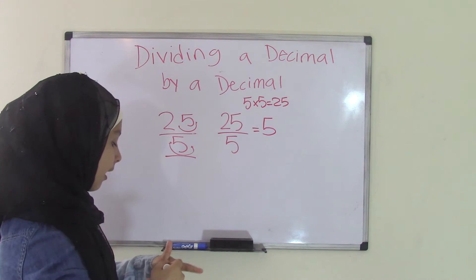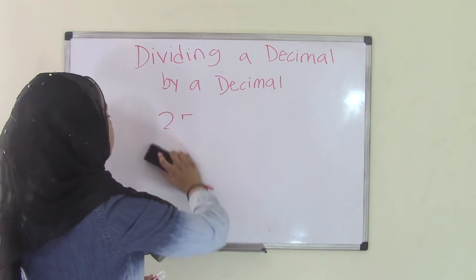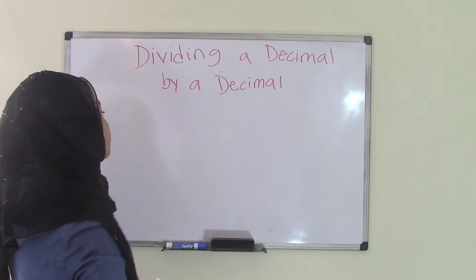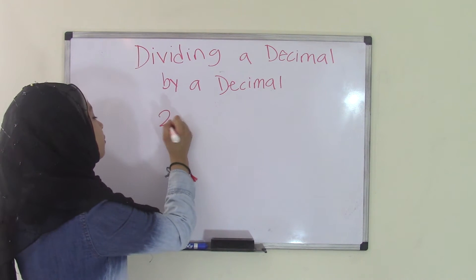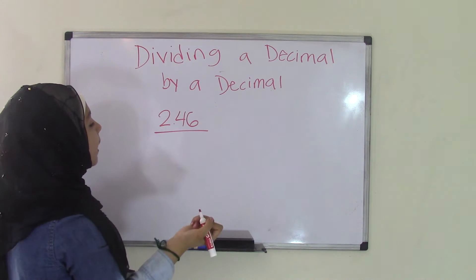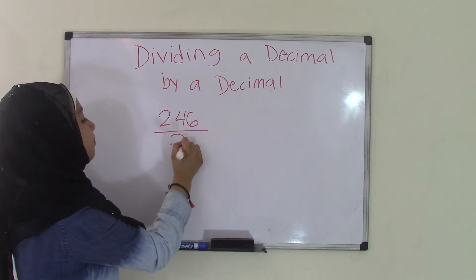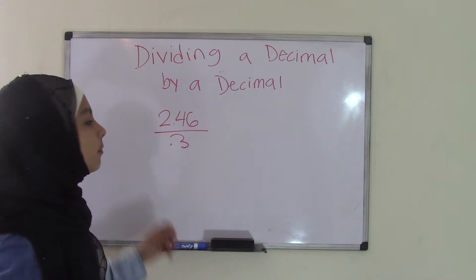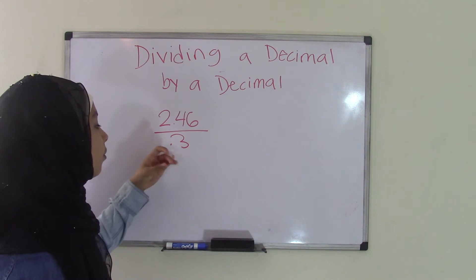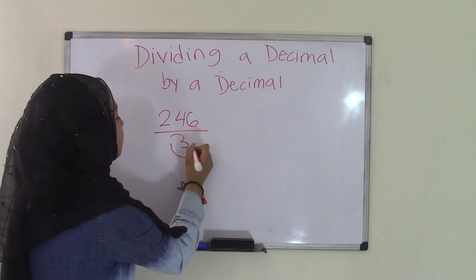Now that was very easy, right? How about we have problems such as 2.46 divided by 0.3. Alright, now we have to make this into a whole number, right? So if we move it one place from left to right, it becomes 3.